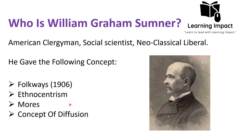Sumner coined the sociological terms folkways, ethnocentrism, and mores. He distinguished between folkways — which he referred to as right versus wrong — and mores — which are considered right versus rude. He also made a contribution in the natural sciences: in chemistry he gave the concept of diffusion, stating that the ratio of the diffusion rate of two gases is the same as the ratio of the square root of their molar masses. This is known as Graham's law in chemistry.